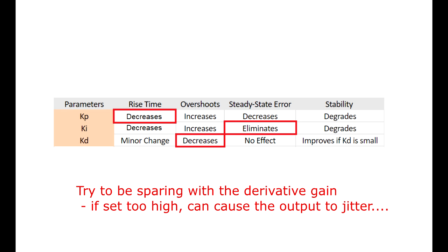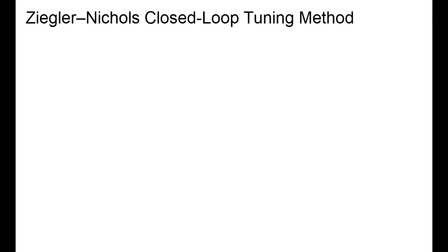Now although this table provides us with a good insight to how each gain affects the system response, it doesn't tell us what values we should start off with for our specific system. And this brings us to the famous Ziegler-Nichols closed-loop tuning method.